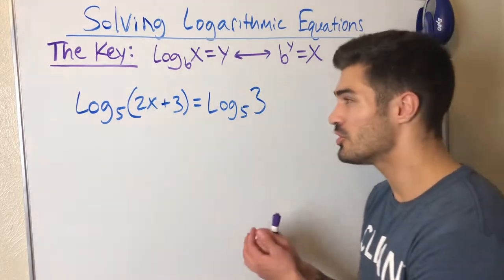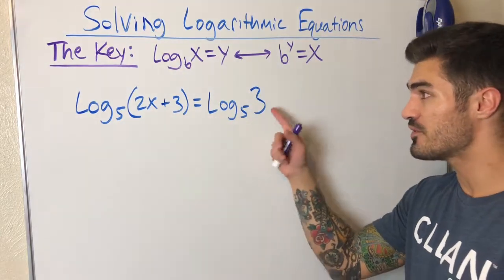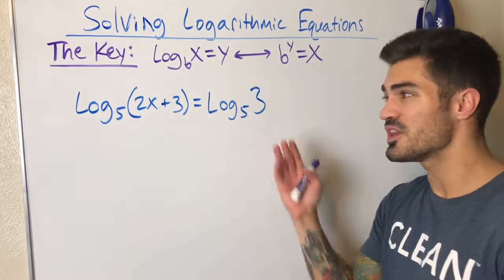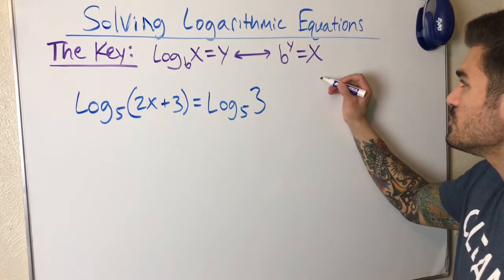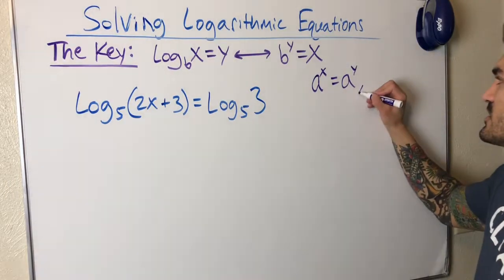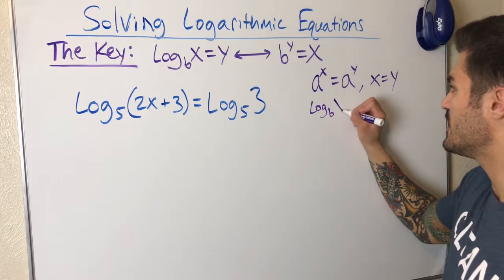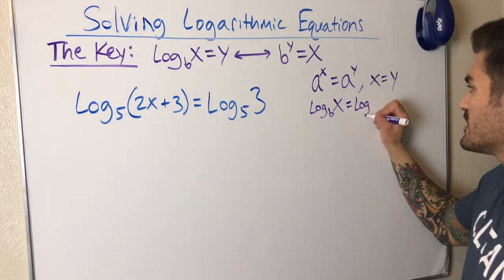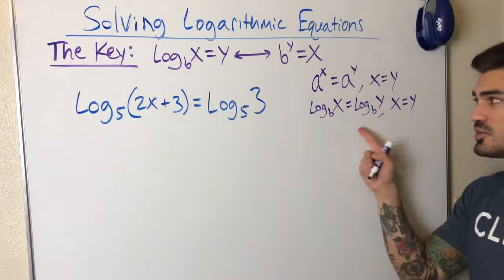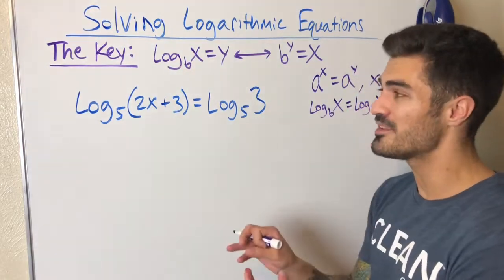We have log base five of (2x + 3) equals log base five of three. Think about it: log base five of something equals log base five of something — that means those somethings must be equal. Just like with exponential equations where we could set equal powers when the bases matched, the same logic applies to logarithms: if log base b of x equals log base b of y, then x must equal y.